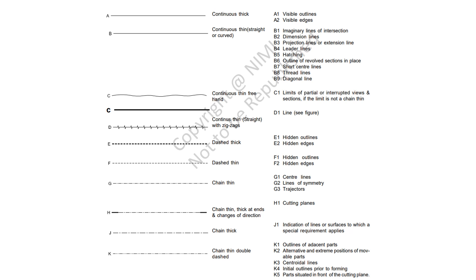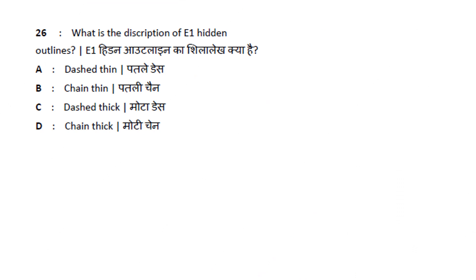Chain thin and chain thick are used for cutting planes and indication of lines or surfaces with special requirements. Chain thin double dash is used for centroid lines. For even hidden outlines, the answer is option C — dashed thick line represents even hidden outlines and edges.